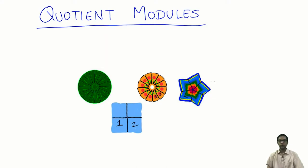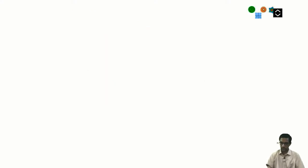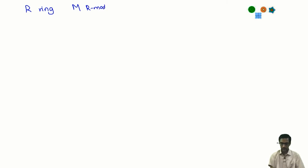Let us talk about quotient modules. Let us take a ring R and a module M over R, where M is an R-module and N is a submodule of M.